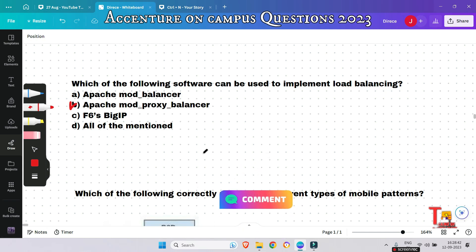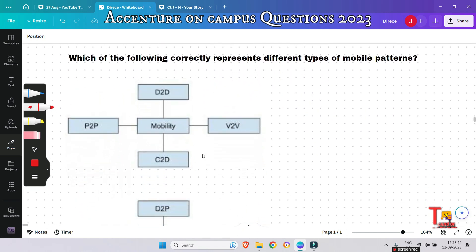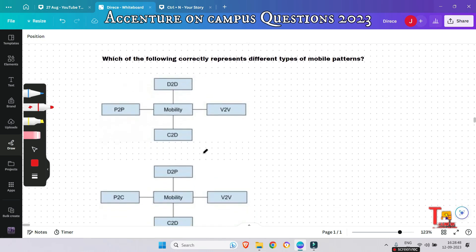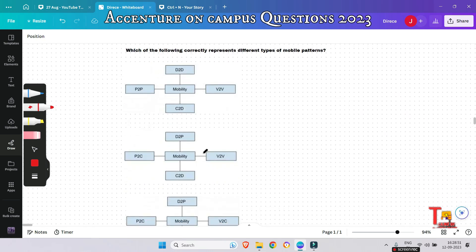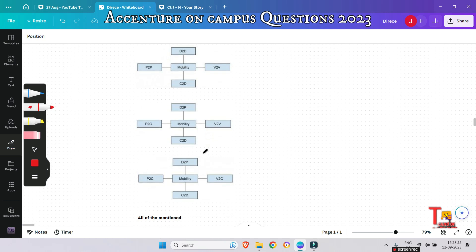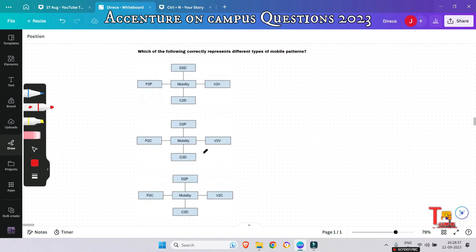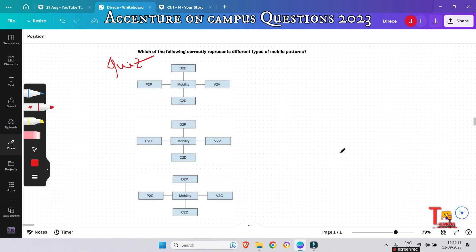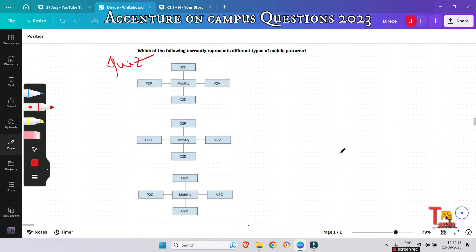The next question is: Which of the following correctly represents different types of mobile patterns? Please pause the video and try to give me the solution. I am not discussing this question in this video. I will discuss this, if you want, in the next video. So this will be a quiz question for you. Please pause and research about the question - you will get to know a lot of things. Let's see who can give the answer in the comment section.